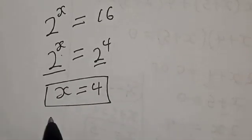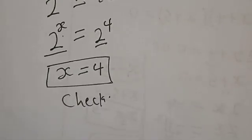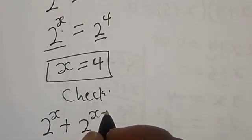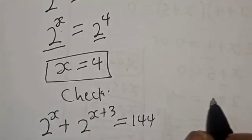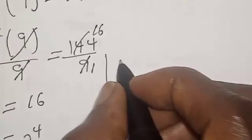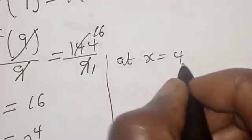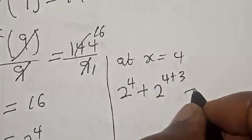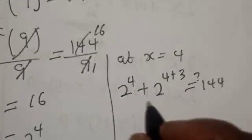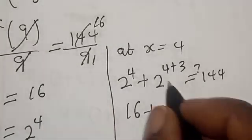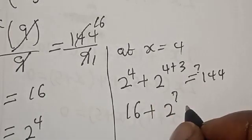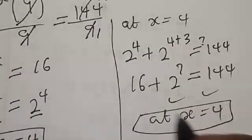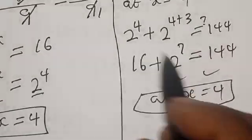To check if our answer is right, let's verify the given equation: 2 raised to power s plus 2 raised to power s plus 3 equals 144. At s equal to 4, we have 2 raised to power 4 plus 2 raised to power 7 must equal 144. Now 2 raised to power 4 is 16, plus 2 raised to power 7 is 128, and 16 plus 128 equals 144. We satisfy the given equation at s equal to 4. If you enjoyed the class, please don't forget to like, share, comment and subscribe. Thank you.